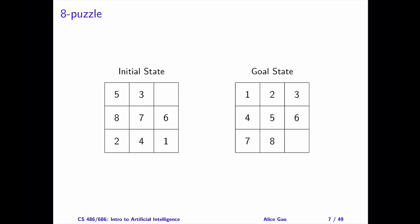Next, let me talk about a few simple and stylized problems. The 8 puzzle is a sliding puzzle. The numbers 1 to 8 are in a 3x3 grid. Our goal is to move the tiles horizontally or vertically until we transform the puzzle to the goal position.